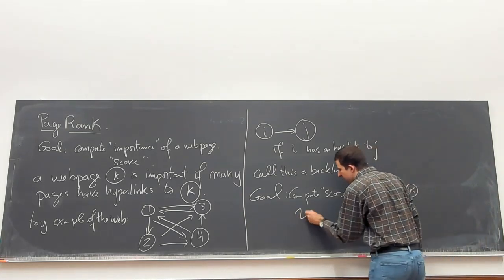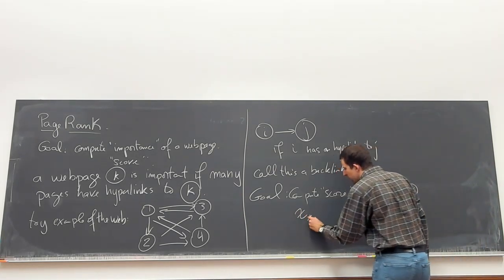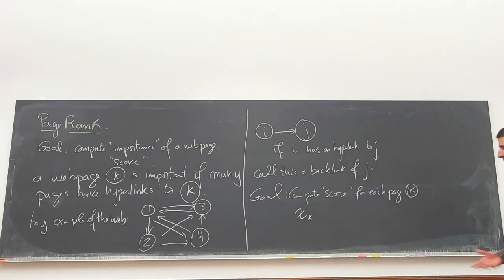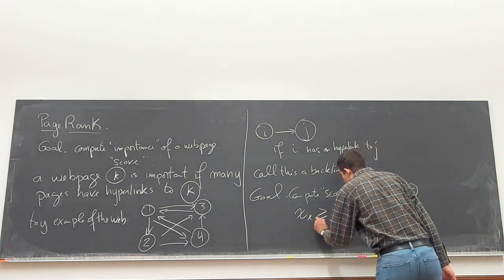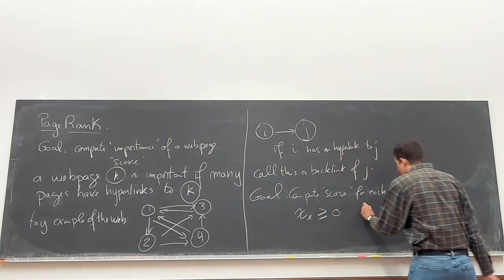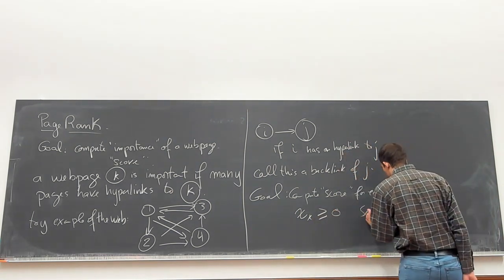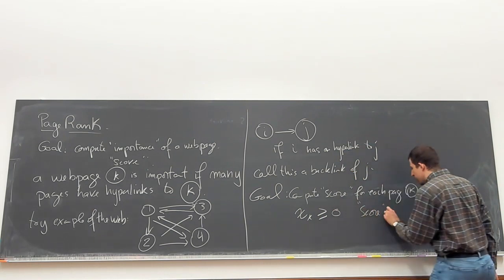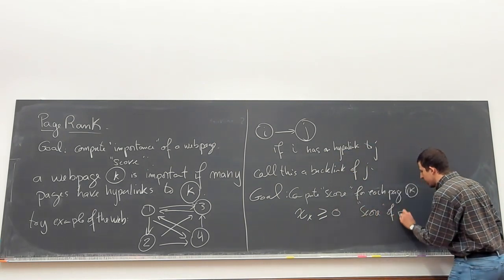So here is the internet. We put a connection from i to j if i has a hyperlink to j. And we call j a backlink from j's perspective. We have this type of structure. Now the goal is to come up with a good score — compute some type of score for each page — and we're going to call this x_k. We want x_k to be non-negative and represent the score of page k.